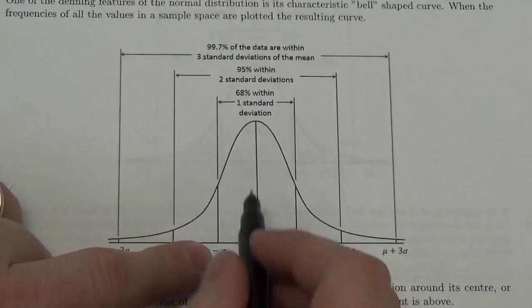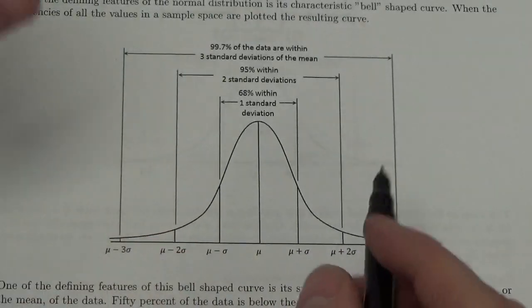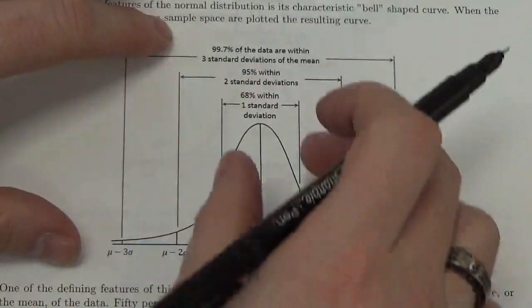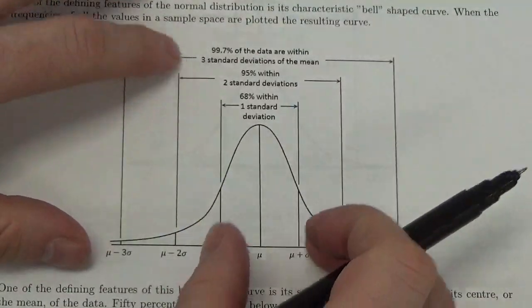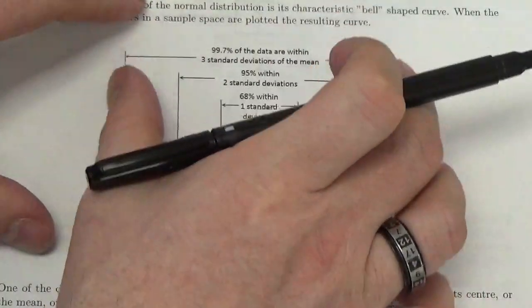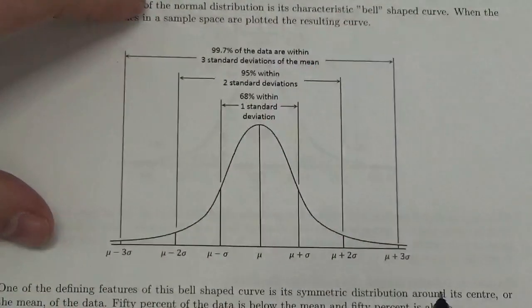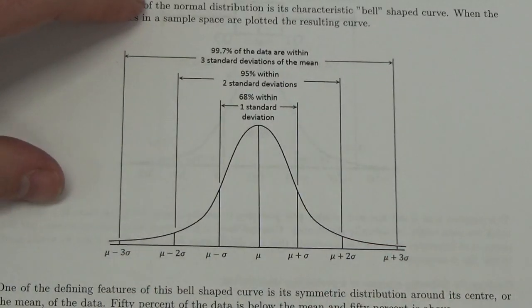And when we cut it with the mean and then we go out standard deviations, it cuts it beautifully in these little intervals here where 68% is within one standard deviation of the mean, 95% is within two standard deviations of the mean, 99.7% of the population is within three standard deviations of the mean.